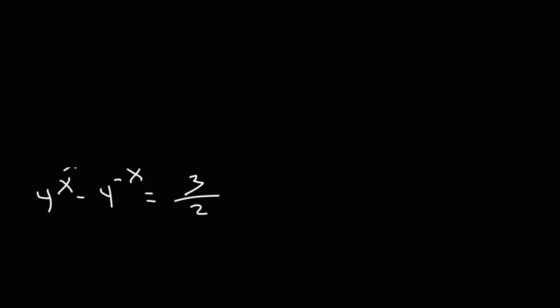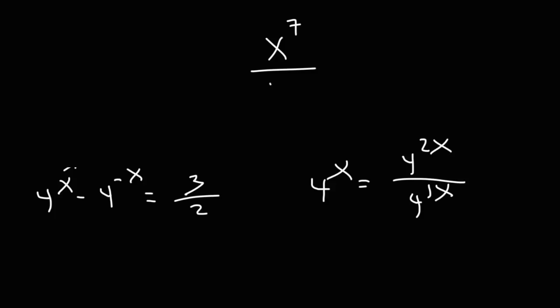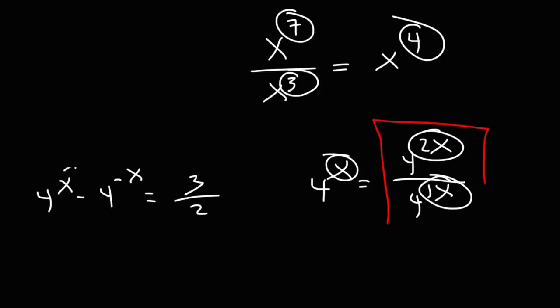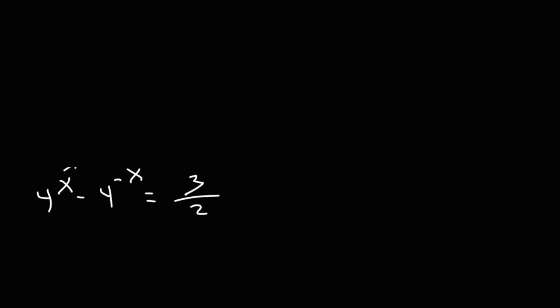What do you think we need to do next? We need to adjust the equation a bit. 4 raised to the x is equal to 4 raised to the 2x divided by 4 raised to the 1x. To review exponents: x to the 7th divided by x to the 3rd equals x to the 4th — when you divide, you subtract the exponents. 7 minus 3 is 4, and 2x minus 1x is x. So we can replace 4 to the x with 4 to the 2x over 4 to the 1x because they're mathematically equivalent.